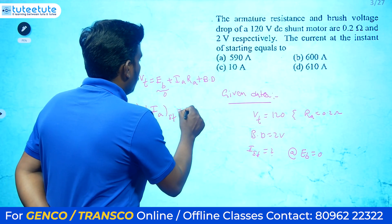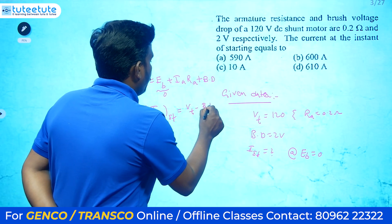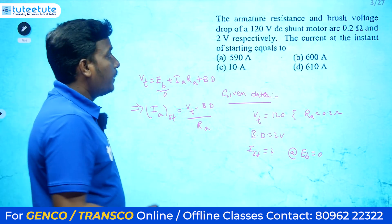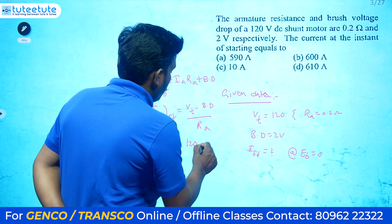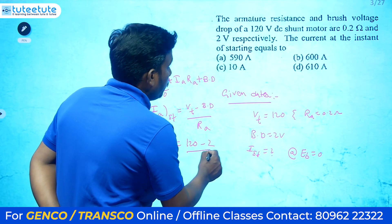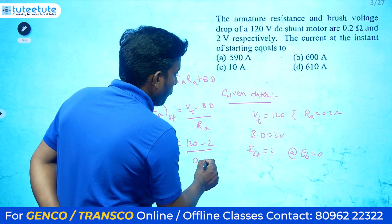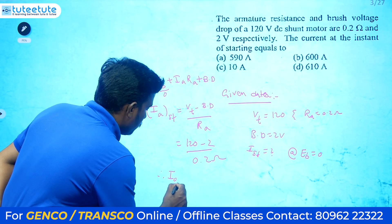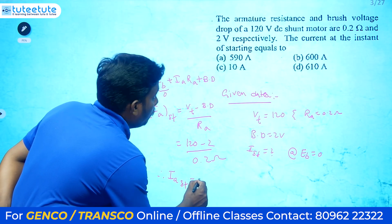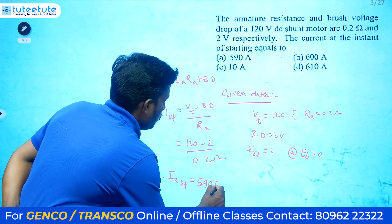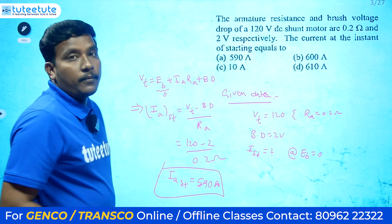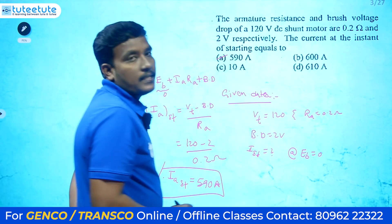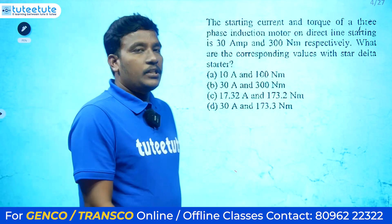So the armature current at starting is: Ia = (Vt − brush drop) / Ra = (120 − 2) / 0.2 = 590 amperes. The starting current is 590 amperes. The answer is option A.